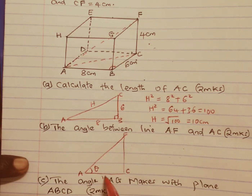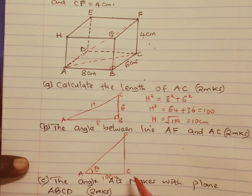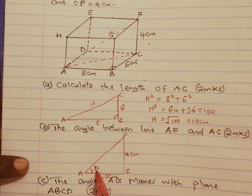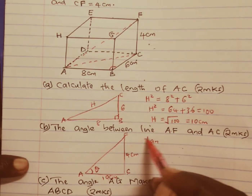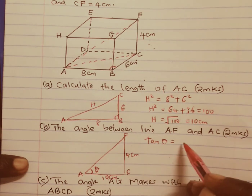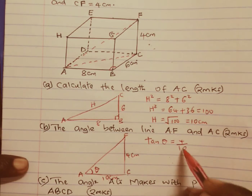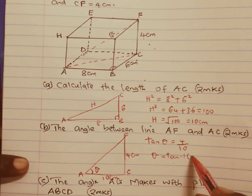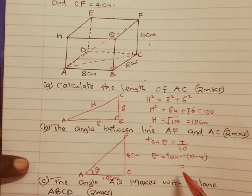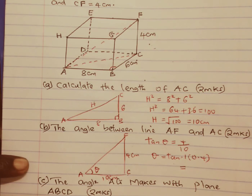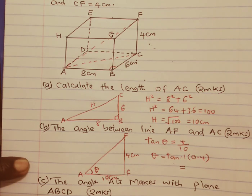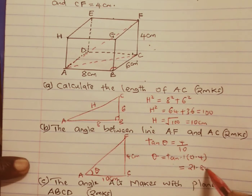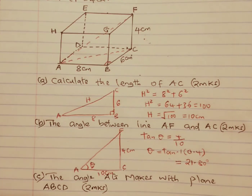We have AC as 10 cm and AF as 4 cm. The angle we need is theta and we are given the opposite and adjacent sides, so we can use tan. Tan theta equals opposite over adjacent which is 4 over 10. To get theta we take the tan inverse of 0.4, which gives us 21.80 degrees.